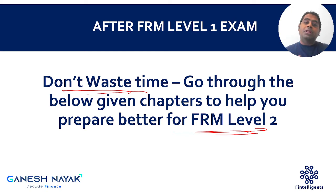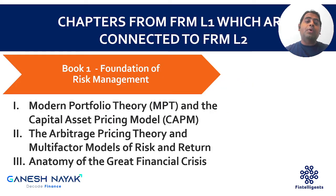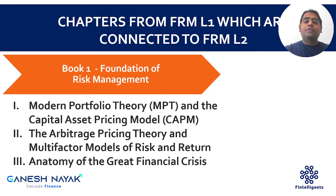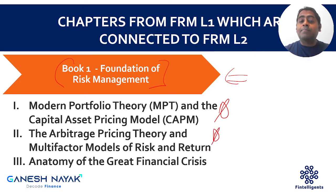Even if results are not out, you can still revise these chapters from FRM Level 1 to get an edge for Level 2. Now let us go through each book and understand which are the important chapters connected to FRM Level 2. From Book 1, which is Foundations of Risk Management, Modern Portfolio Theory is very important and Arbitrage Pricing Theory is very important.